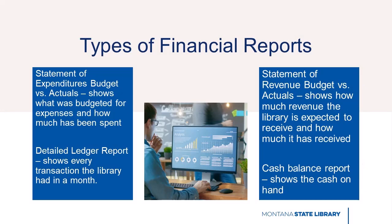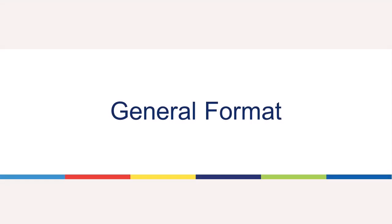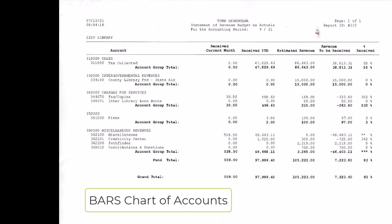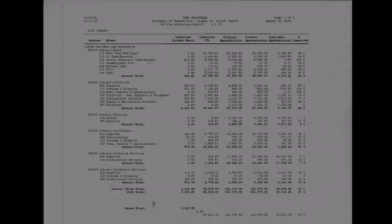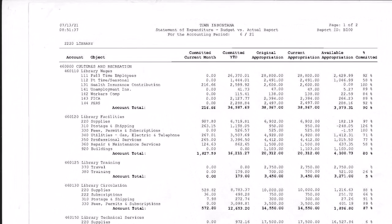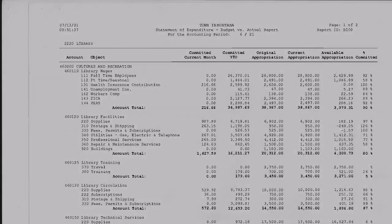Now we'll take a closer look at sample revenue and expenditures reports. These reports are generated from the Local Government Accounting System and are consistent with the BARS Chart of Accounts, a framework for governmental accounting systems. You will see amounts broken out in columns with different headings. These reports are used by the director to manage the budget, and then report out any items of interest to the board when it meets.